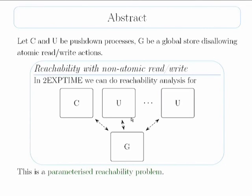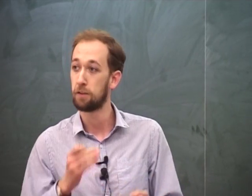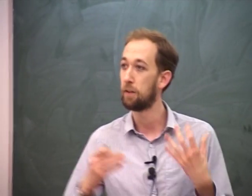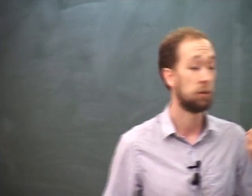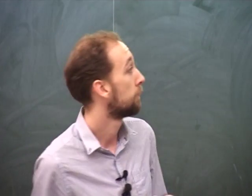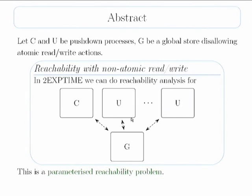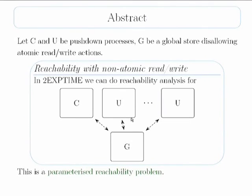The processes can write to this store or read from this store, but they cannot do this at the same time. They cannot check a value and then set it atomically — if they want to look at the value and then write to it, they have to do that in two separate operations. So in between those two operations, obviously anything can happen. That's what we mean by non-atomic. The result is that if you ask whether there is a number of U's to put with the system to make sure whether a state is reachable, we can decide that in double exponential time.